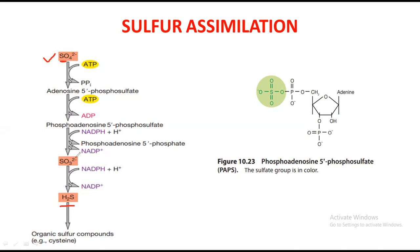Sulfate is present abundantly in the atmosphere, so through different chemical reactions it must be converted into reduced form. First, ATP binds to the sulfate and converts it into adenosine 5'-phosphosulfate (APS). Then another ATP binds and converts it into phosphoadenosine 5'-phosphosulfate (PAPS), and after that into SO3. With the help of NADPH — which provides hydrogen — it is converted into H2S form. Now it is completely reduced; this is the organic sulfur compound that can be directly incorporated into amino acids.